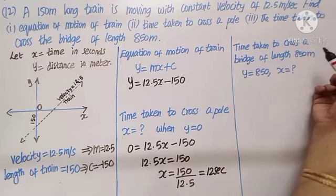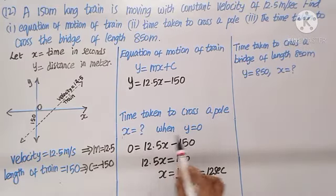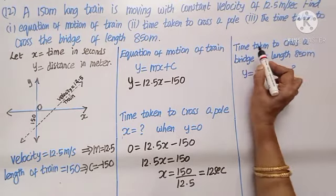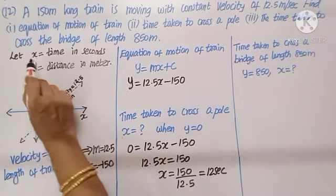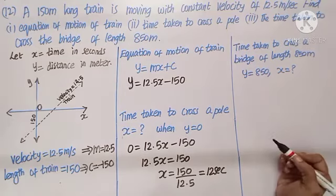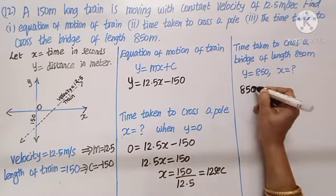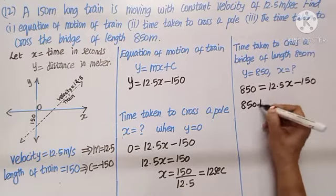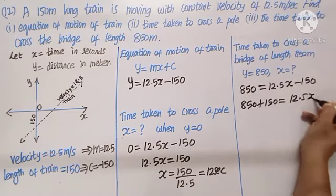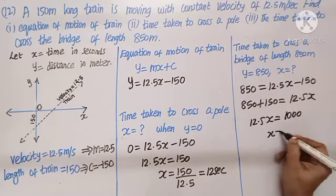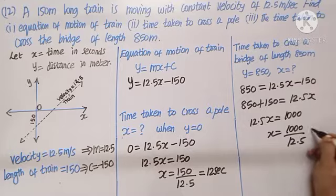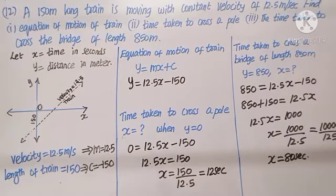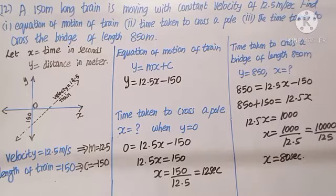Third subdivision: time taken to cross the bridge of length 850 meters. When crossing a bridge of length, put Y equals 850. Substituting: 850 equals 12.5X minus 150. So 850 plus 150 equals 12.5X, giving 12.5X equals 1000, and X equals 1000 divided by 12.5, which is 80 seconds. Finding the time to cross a pole and a bridge are interesting applications of the equation of lines.